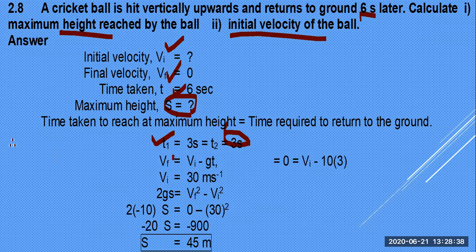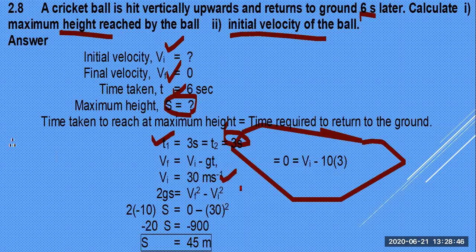By applying these conditions and substituting values, calculate the initial velocity and total height. Final velocity at the top is 0; time is 3 seconds. Use the first equation of motion Vf = Vi + at to find initial velocity, then calculate the distance traveled by the object using S = Vit + ½at².